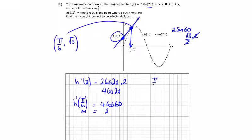And we have two points here, so we have pi over 6, root 3, and we have the point 0, k, and we have m equals 2.